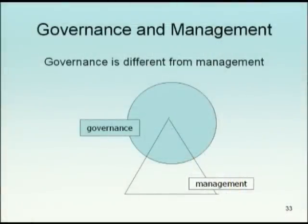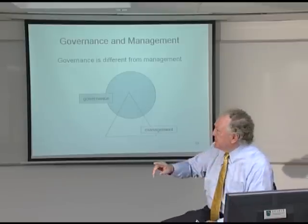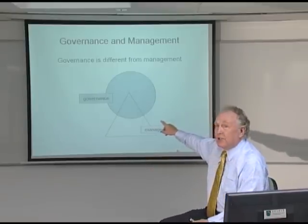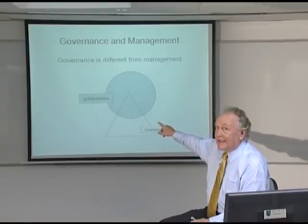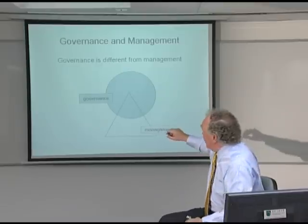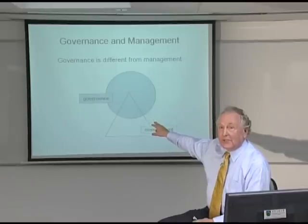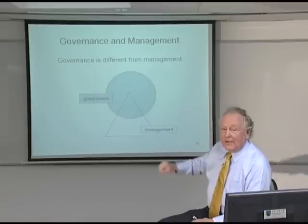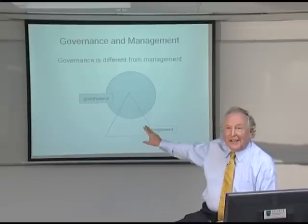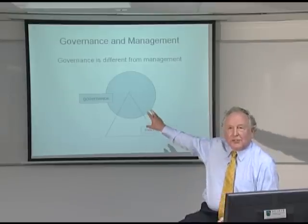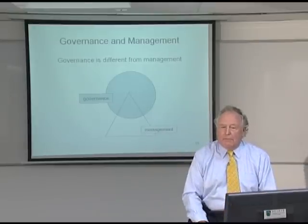In the governing body — in the circle of the board — there are two types of directors. There'll be those directors who are both in the circle and in the triangle: those are your executive directors. And there'll be those directors who are in the circle but outside the triangle: those are outside directors, or non-executive directors. This simple diagram enables us to chart any governing body you can imagine. In essence, we've separated governance from management.